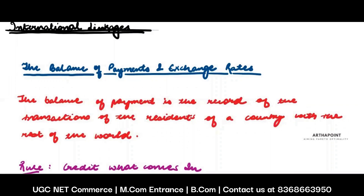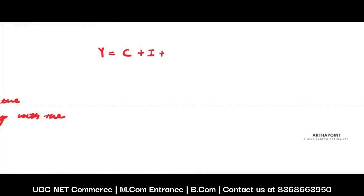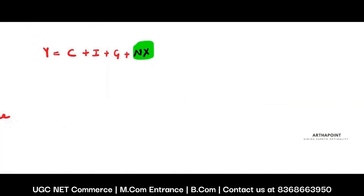In this lecture, we are going to understand what is meant by international linkages. In particular, this can be considered as a chapter that tries to go beyond the concept of closed economy. Till now, whenever we have seen the formula y = c + i + g + nx, we haven't really focused on this part of net exports. We have always considered an economy where there is no external sector.